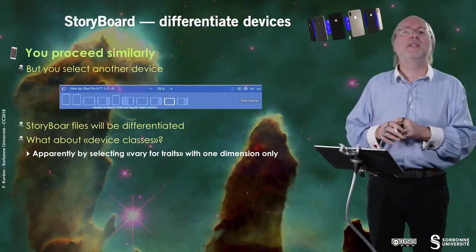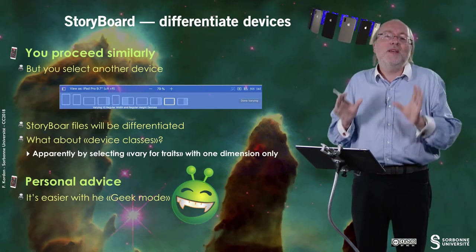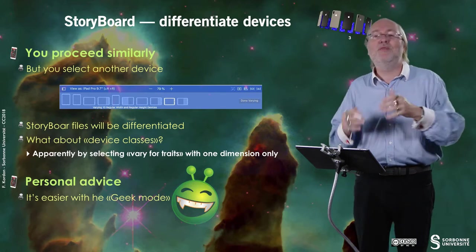How to deal with device classes? I did not personally experiment this in detail because I'm not very fanatic of storyboards. But apparently, if you select varying traits in one dimension only, you can deal with several types of terminals. In a previous version of Xcode, you had various sizes in general for traits — horizontal and vertical. A personal advice: when you want to have something very differentiated for each type of terminal, is to go to the geek mode, to the programmatic mode. For me, it's typically easier in that mode.